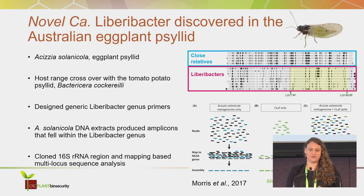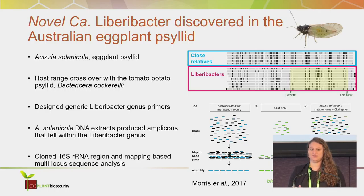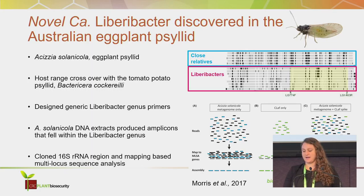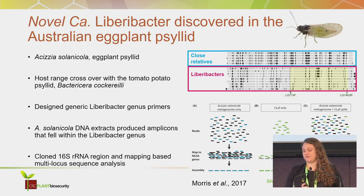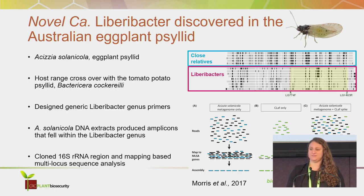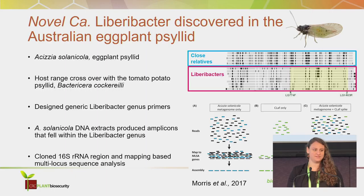To approach these biosecurity questions, I designed some generic primers to detect all known Liberibacter species — those that are pathogenic and those that haven't been associated with disease — and to exclude close alphaproteobacterial relatives. I checked many Echizia solanocola DNA extracts, and the amplicons I obtained fell within the Liberibacter genus, so I needed more information.